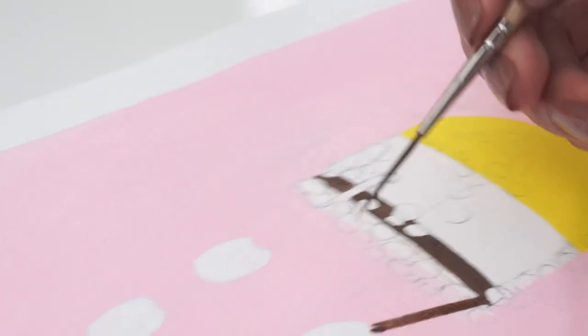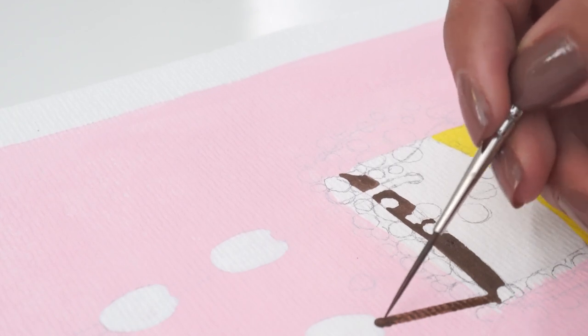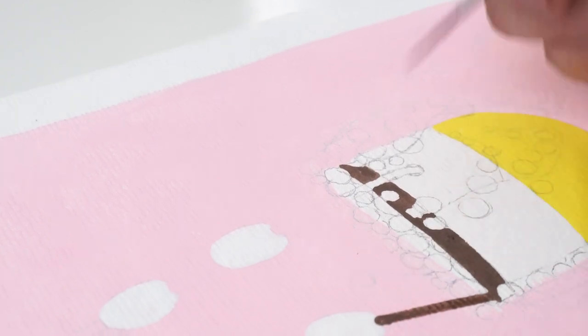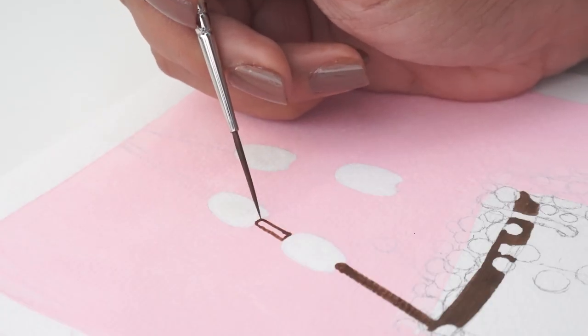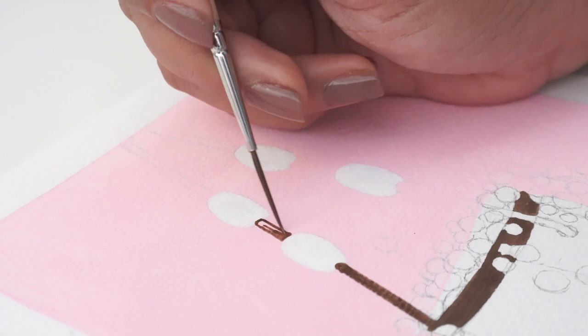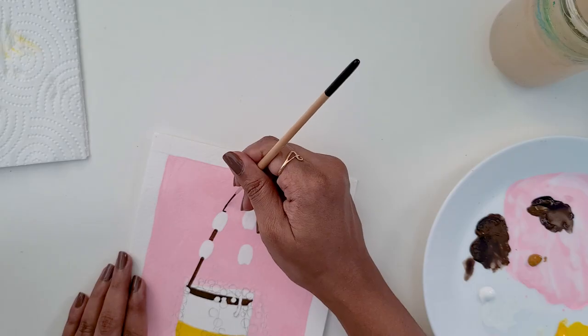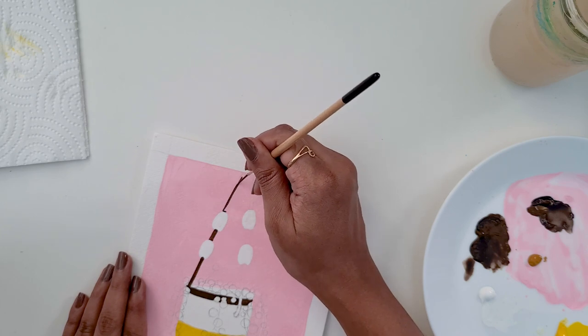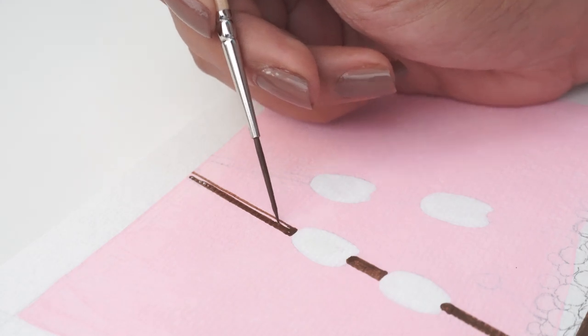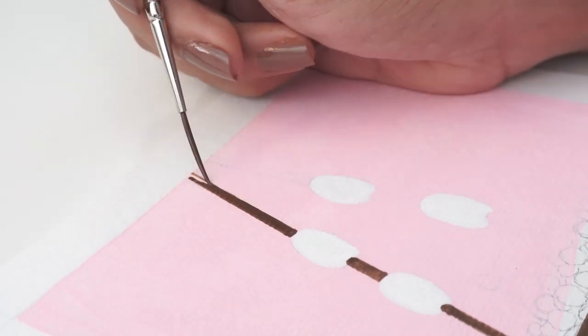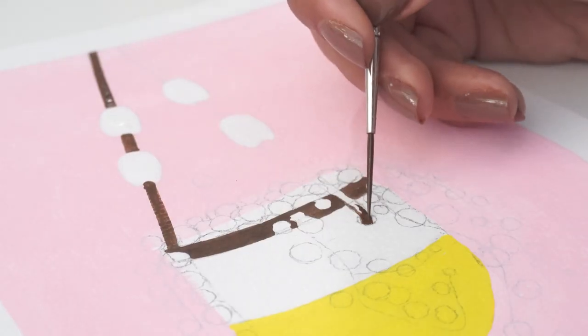For little details like this curved part, we use just the tip of the brush very lightly for better control. Just very light pressure with just the tip of the brush for the outlines and then use more pressure for the larger areas of the line.